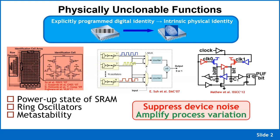The basic idea behind physically unclonable function circuits is that we design them to be perfectly balanced at design time. When manufactured, devices are sized to minimum size — subject to maximum process variation. Every circuit instance on every die looks a little different due to random dopant fluctuations, mask-related issues, and so on. That is where the entropy comes from.